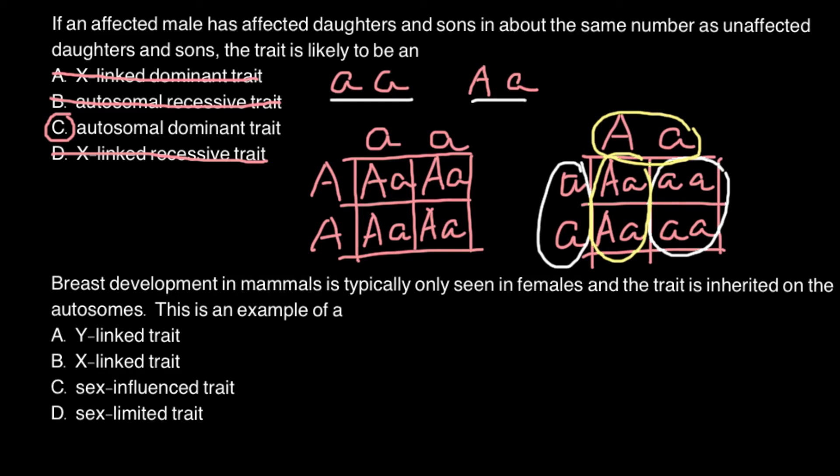In this problem, I want you to pay attention to the word autosomes. That means this is a trait inherited on the autosomes. What does autosomes mean? That means all the chromosomes except sex chromosomes. And we have two sex chromosomes: one is X chromosome, another is Y chromosome. So we can cross out answer B and answer A.